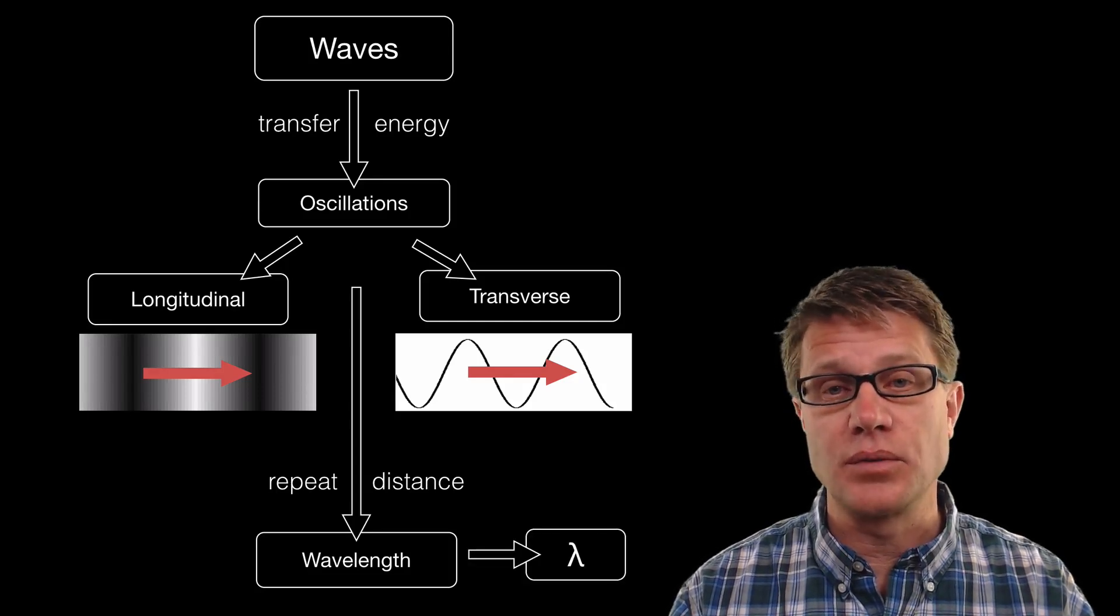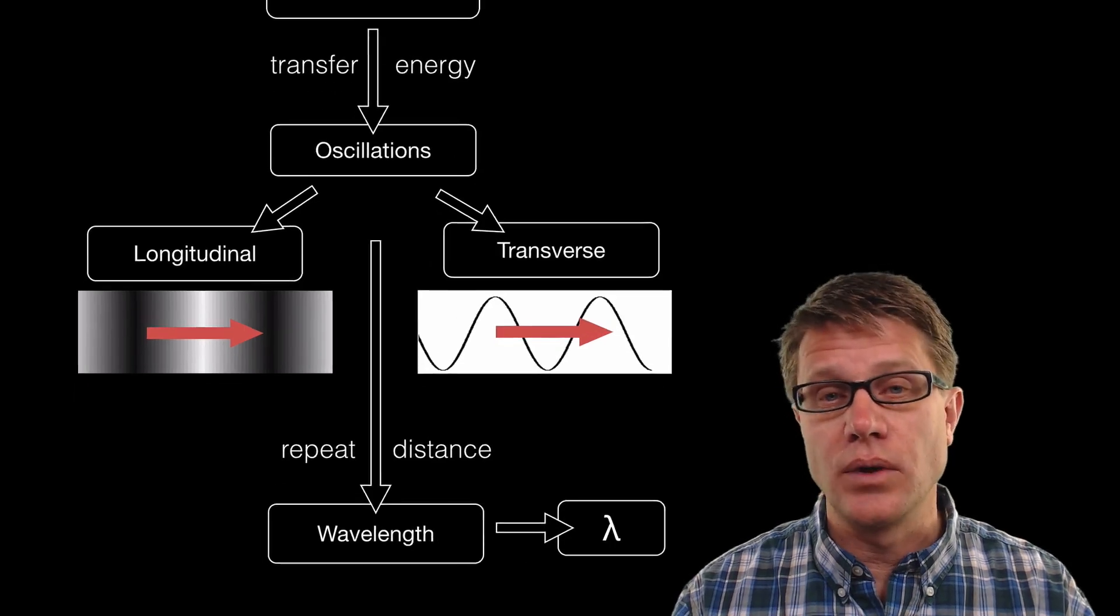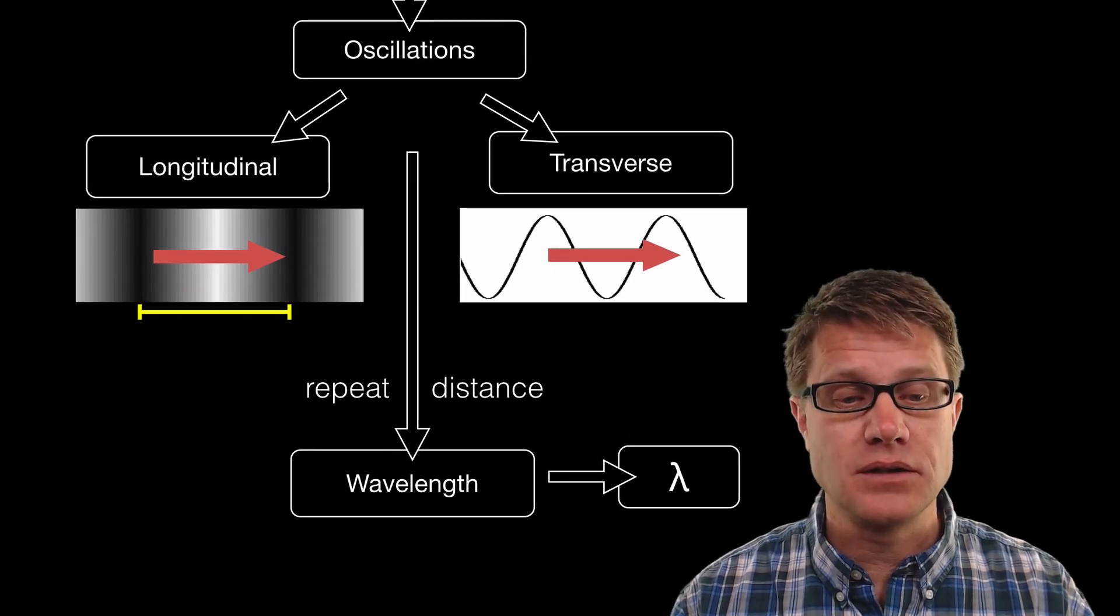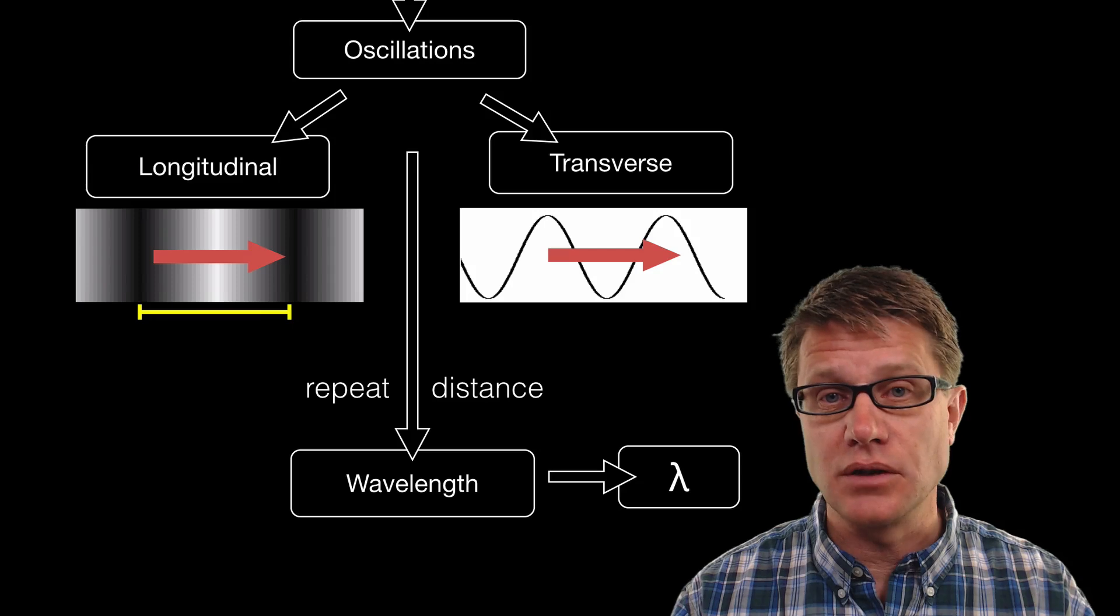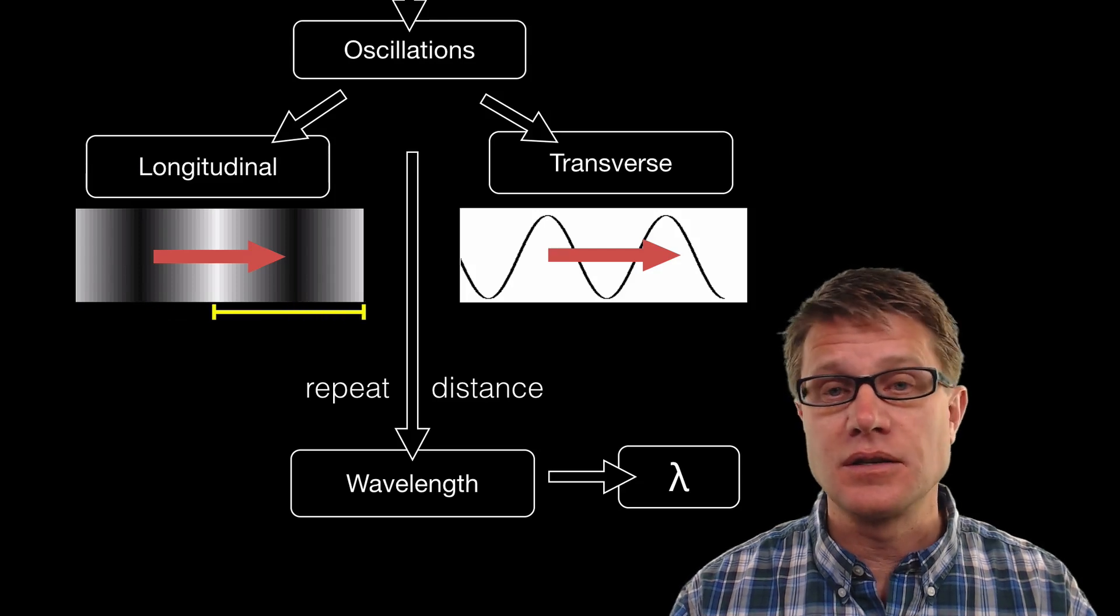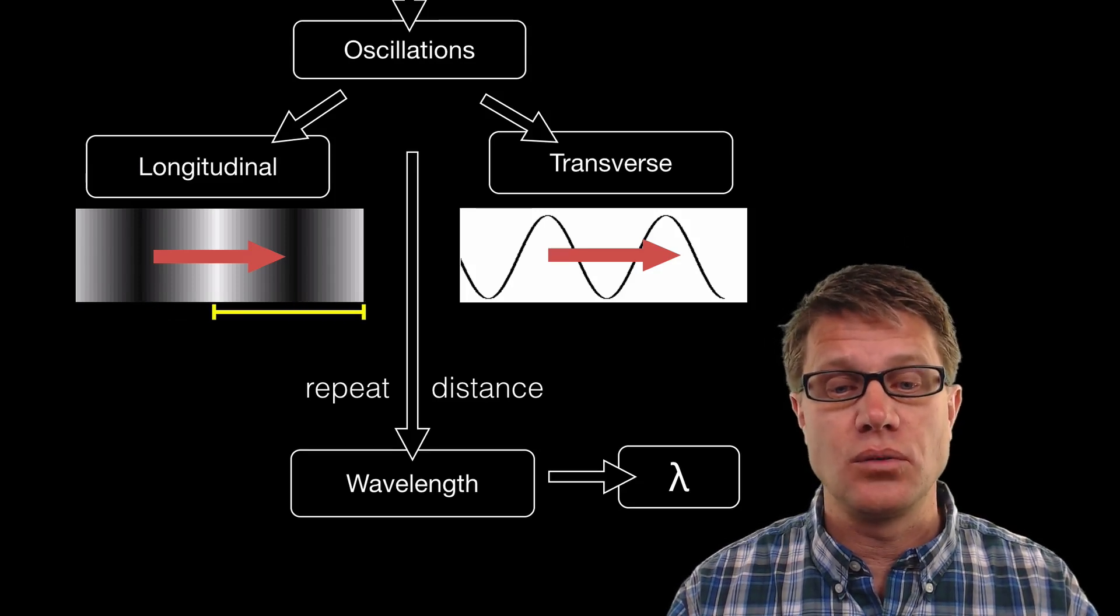We use lambda to represent wavelength. If we look at these longitudinal waves, what would be one wavelength? It's going to be the distance between those compressions, or it could be the distance between the least amount of compressions in those longitudinal waves.